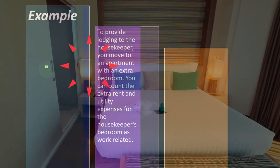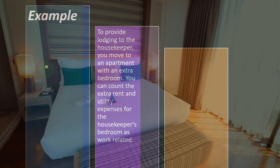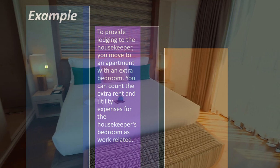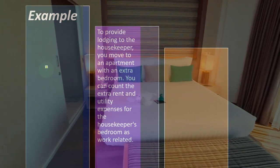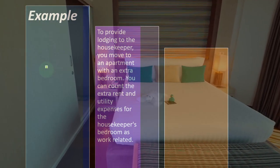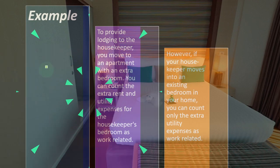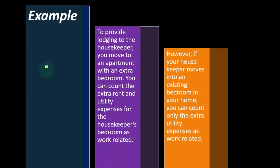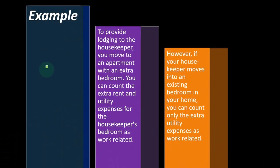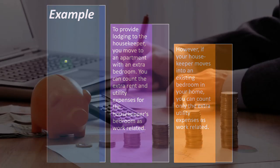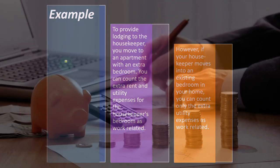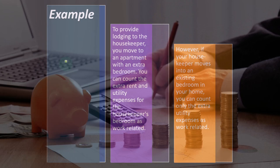Example: to provide lodging to the housekeeper, you move to an apartment with an extra bedroom. You can count the extra rent and utility expenses for the housekeeper's bedroom as work-related. However, if your housekeeper moves into an existing bedroom in your home, you can count only the extra utility expenses as work-related.